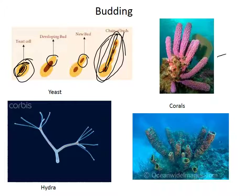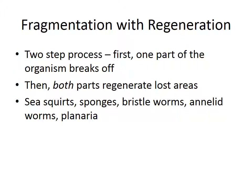Here are corals — you have one coral and it buds, giving all these side branches. Here is a hydra budding into a complete individual at this junction. And here are more pictures of corals at the bottom, showing budding. You can also have asexual reproduction as fragmentation with regeneration.